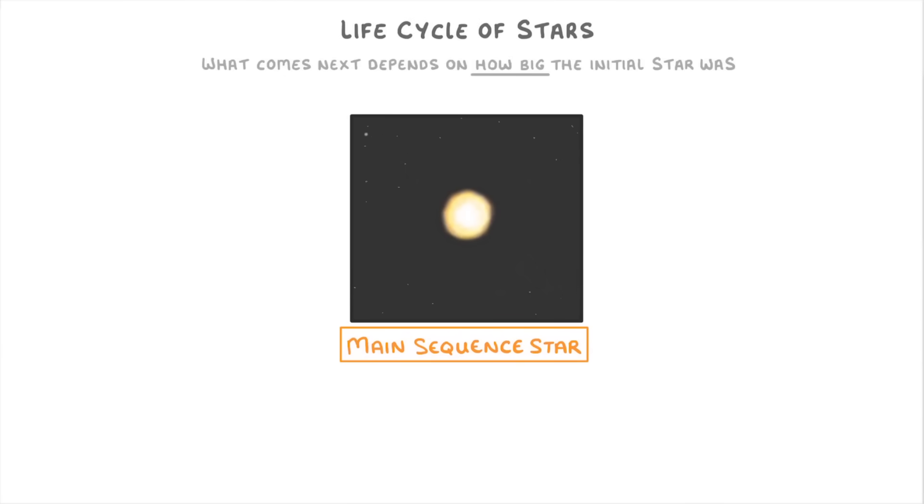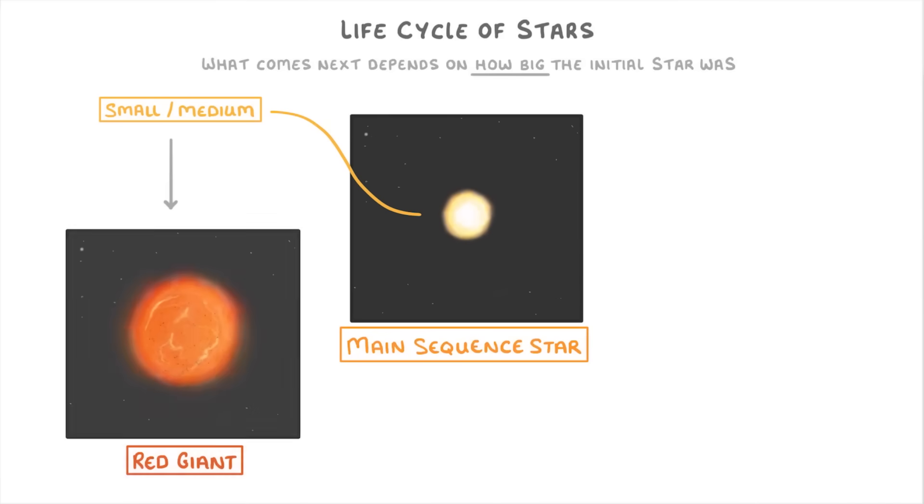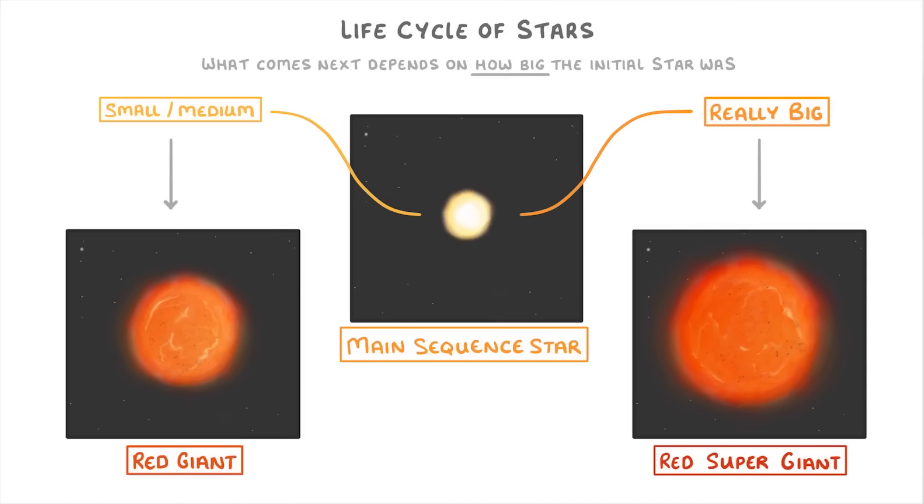Exactly how much the star expands depends on how big the initial star was. If it was a small to medium star, like our sun, then it will form a red giant. But if it was a really big star, then it would form a red supergiant.